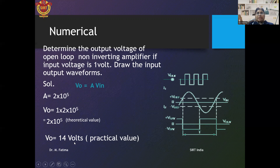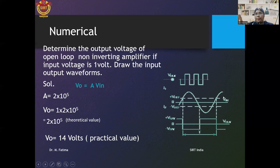Generally, in the 741 IC, VCC is 15 volts and the saturation voltage is 14 volts. So V-out equals 14 volts. Looking at the waveforms: the sine wave input is given, but the theoretical output of 2×10⁵ is not achievable. The available output is only 14 volts. So the signal is clipped at plus V-saturation and minus V-saturation, and the sine wave is converted into a square wave.